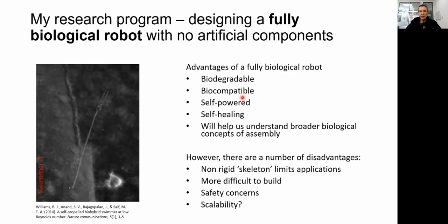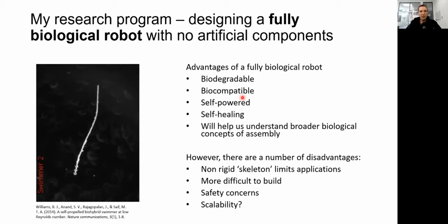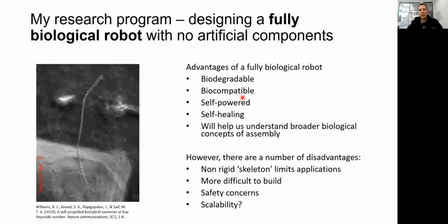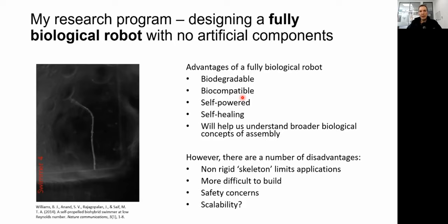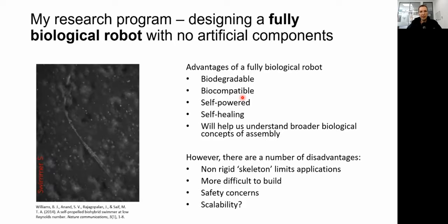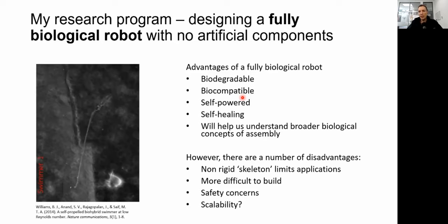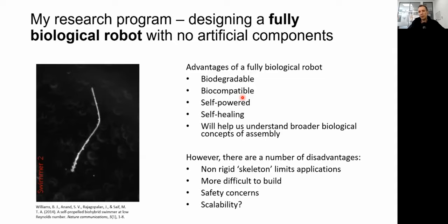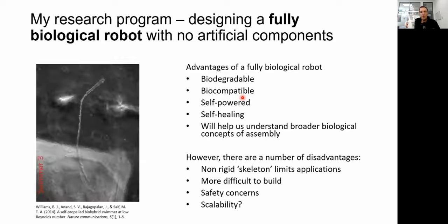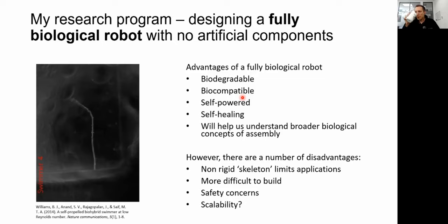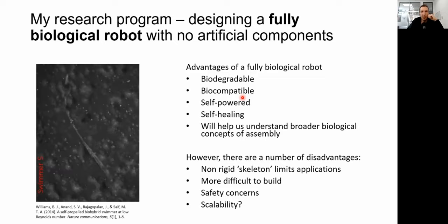However, there are a number of disadvantages to this approach. A non-rigid skeleton can really limit the types of applications — my robots are quite soft, which creates some challenges. They're more difficult to build. There may be safety concerns about a fully biological robot getting loose, and also scalability: you can produce synthetic backbones and components in mass from a 3D printer, but we can't really do that with cells yet — 3D bioprinters don't have that ability, so growing these in mass is currently a big issue.